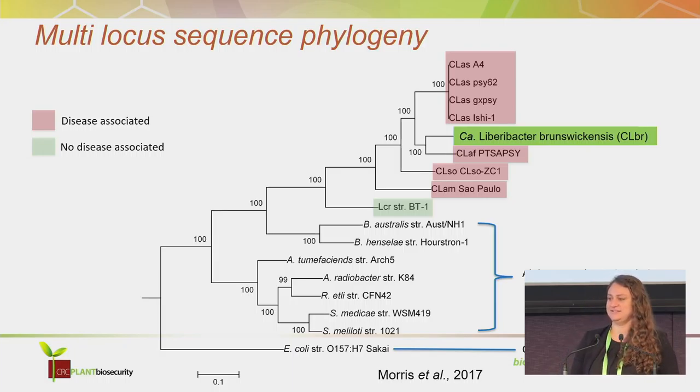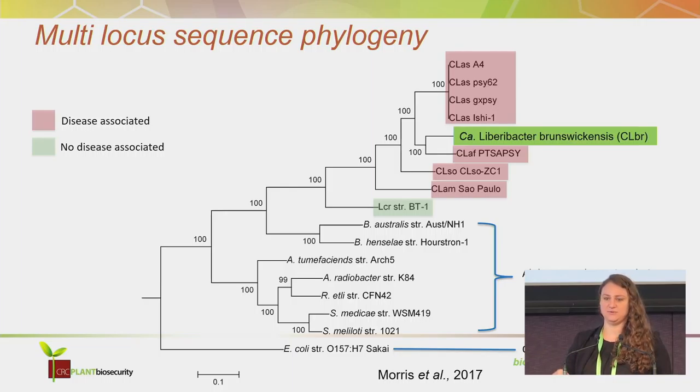We've named this Candidatus Liberibacter brunswickensis, based on where the psyllid was collected.